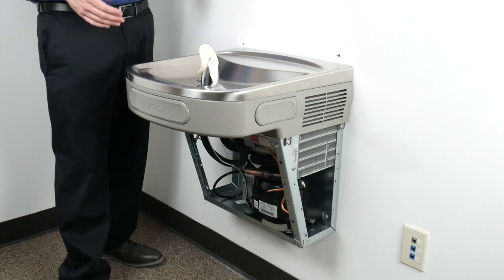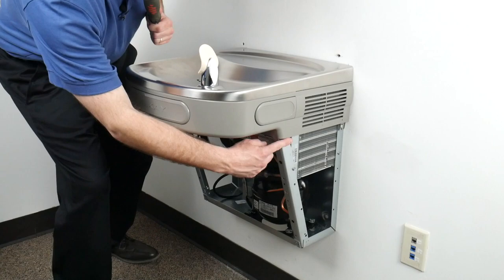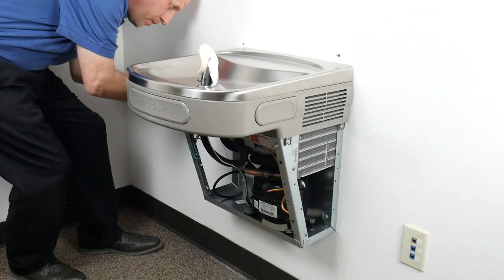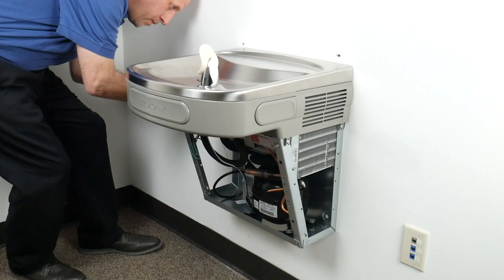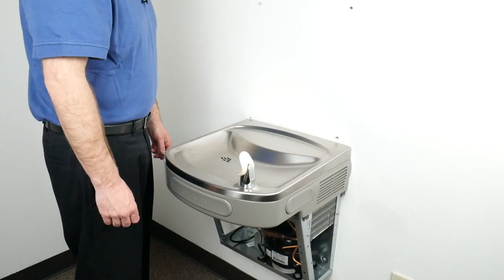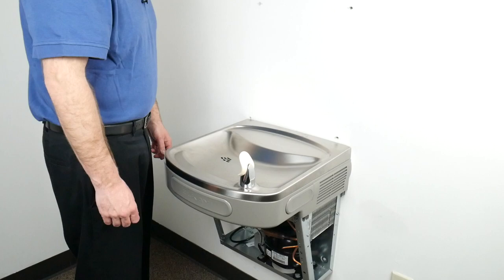The next step, the nose will have to be removed from the drinking fountain by removing four T20 Torx screws, two on each side. Now that the screws are removed from the side, you may remove the entire top from the drinking fountain.